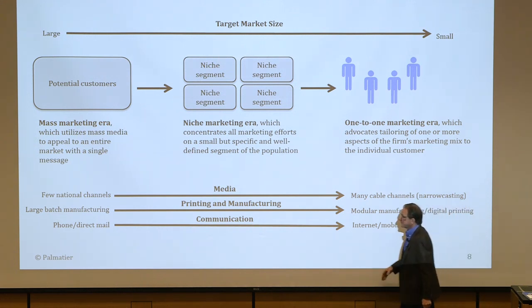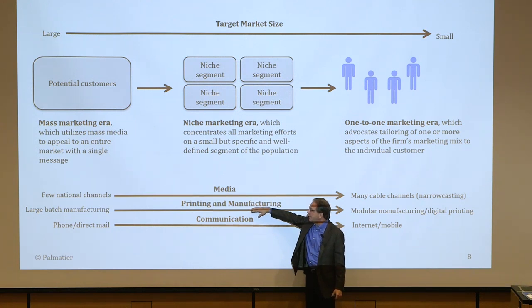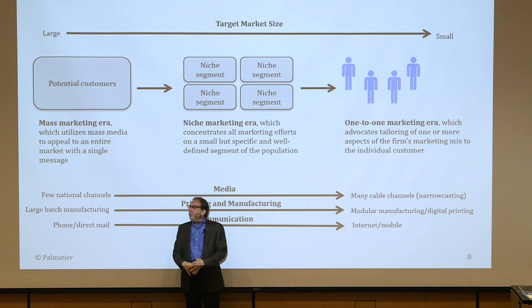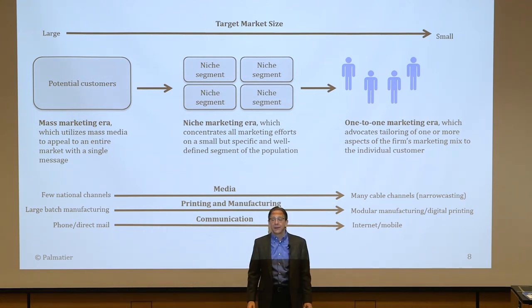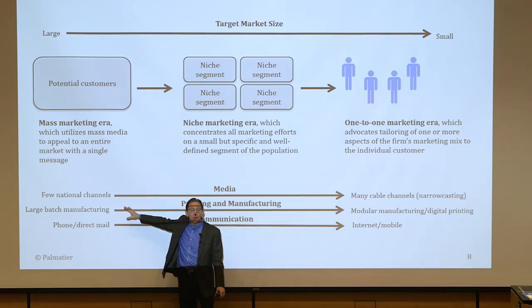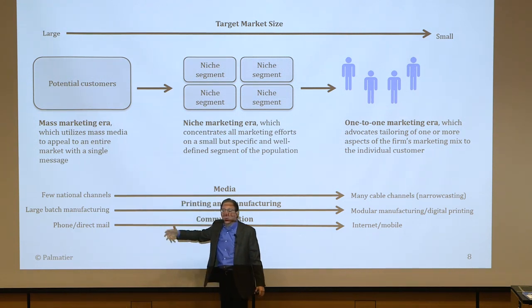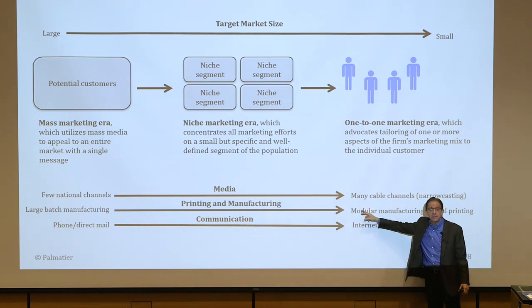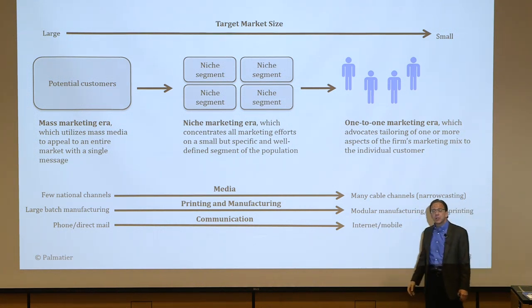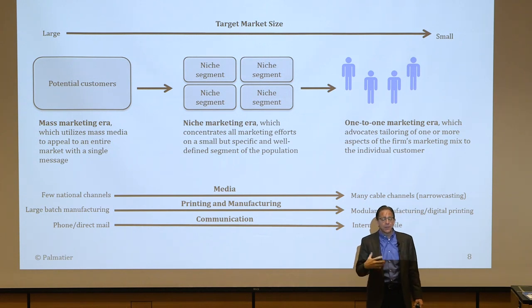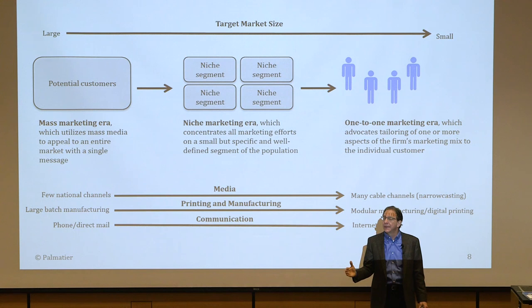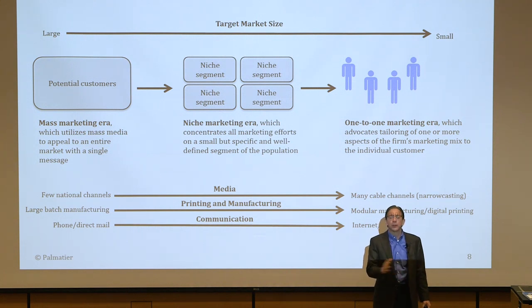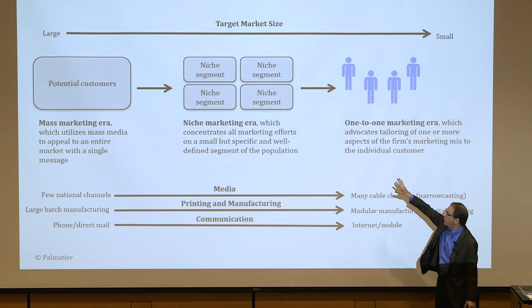Beyond changes in media, there were also changes in printing and manufacturing. Initially most things had to be built in large batches — the Model T Ford: 'any color as long as it's black.' But technology improved so painting cars differently wasn't hard. Now we have modular manufacturing and digital printing — where the second item off the machine can be completely different from the first at no extra cost. This allows you to target smaller and smaller groups.